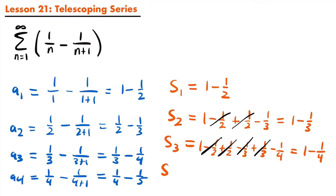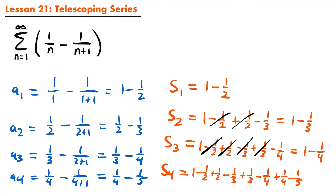Finally, s sub 4 equals a sub 1 plus a sub 2 plus a sub 3 plus a sub 4: 1 minus 1 half plus 1 half minus 1 third plus 1 third minus 1 fourth plus 1 fourth minus 1 fifth. The negative 1 half and positive 1 half cancel, negative 1 third and positive 1 third cancel, and negative 1 fourth and positive 1 fourth cancel, leaving us with 1 minus 1 fifth.